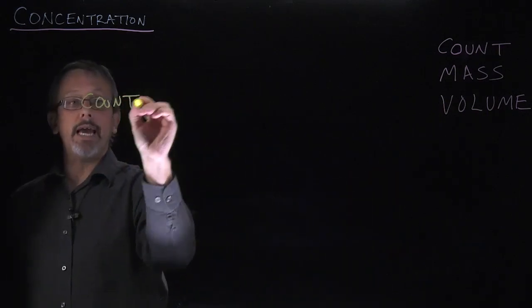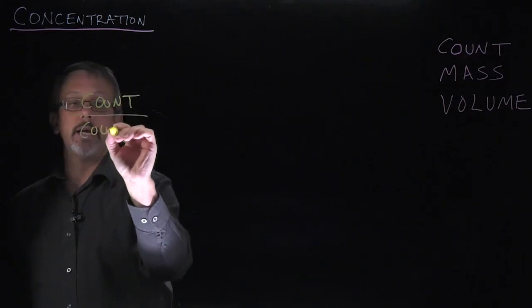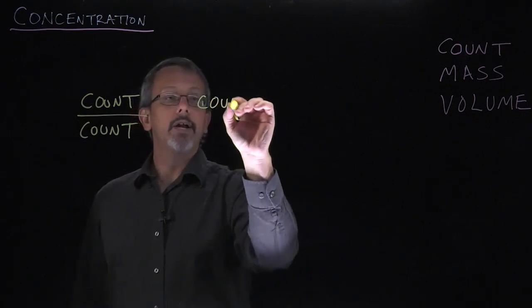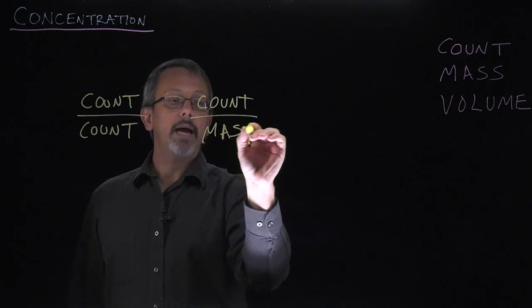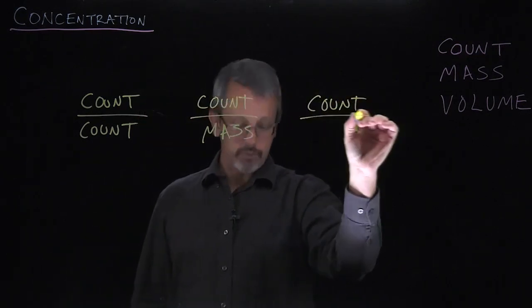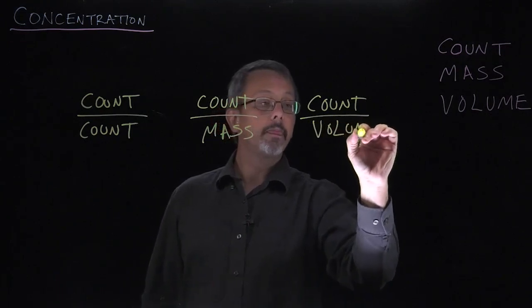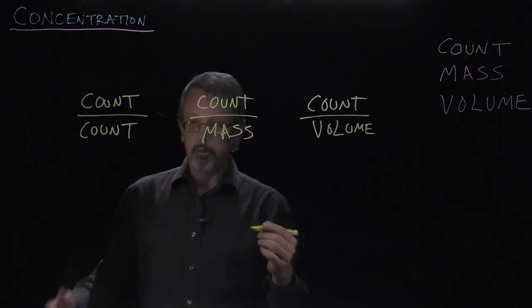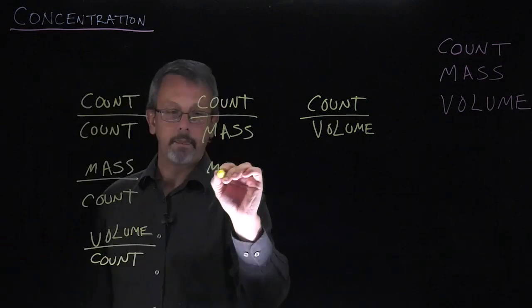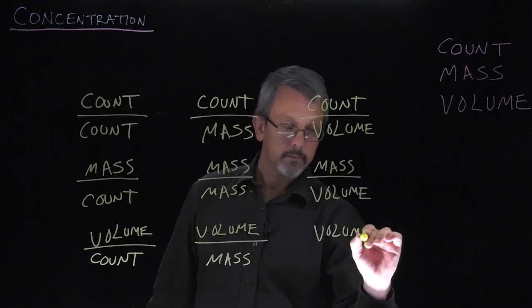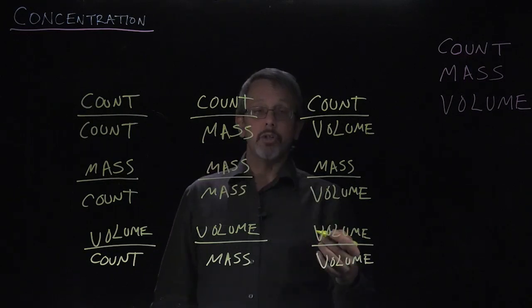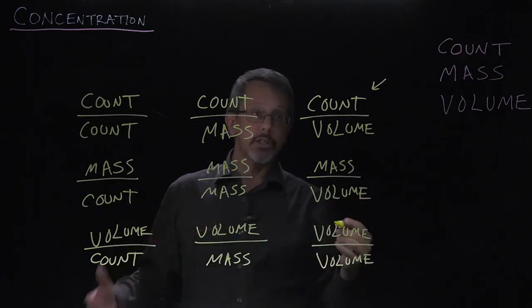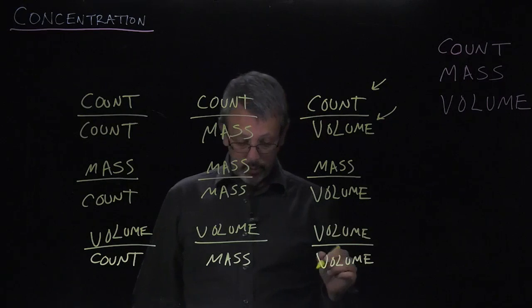For example, we can have the count of my solute divided by the count of molecules in the entire solution. And notice we have a number of different possible combinations, the count over the mass, the count over the volume, and given the three combinations, we actually have nine possible combinations that we can put together here. Note that each of these things are relating one kind of substance, the solute, to a larger mixture of substances, the entire solution that we're talking about here.